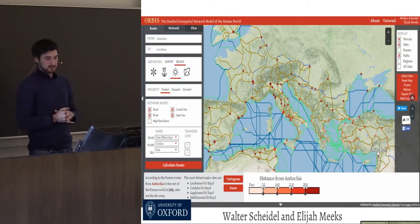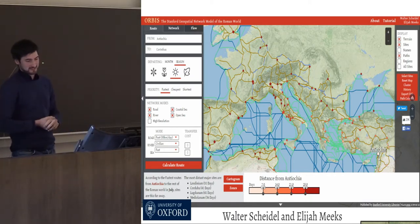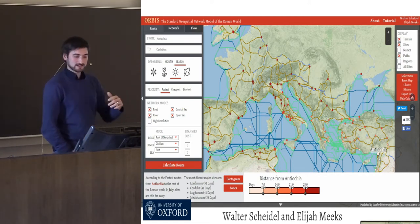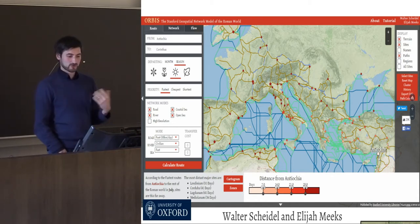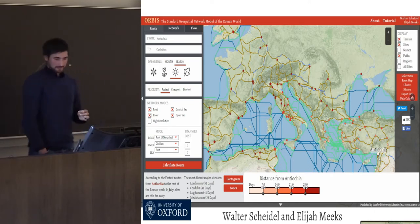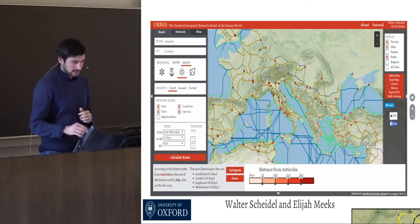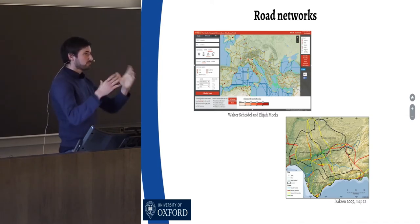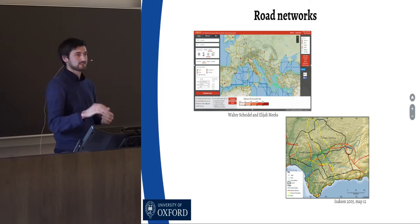Another example already mentioned is the ORBIS tool — it's absolutely fantastic, like the Google Maps of the ancient world. It represents mainly towns and roads from the Barrington Atlas, and you can ask questions like: I'm at Schiphol Airport, how do I get to Rome using only an oxcart? These are very important questions. There's also the use of space syntax, especially access analysis within urban contexts.